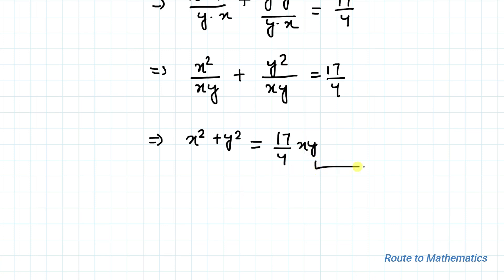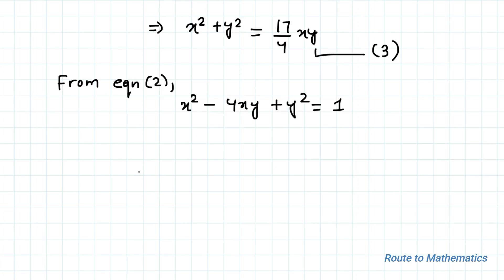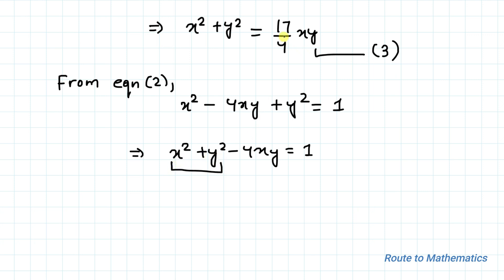Let's take x² + y² = (17/4)xy as equation 3. Now from equation 2 we have x² - 4xy + y² = 1, which we can rewrite as x² + y² - 4xy = 1. From equation 3, x² + y² = 17xy/4, so let's substitute that value here.